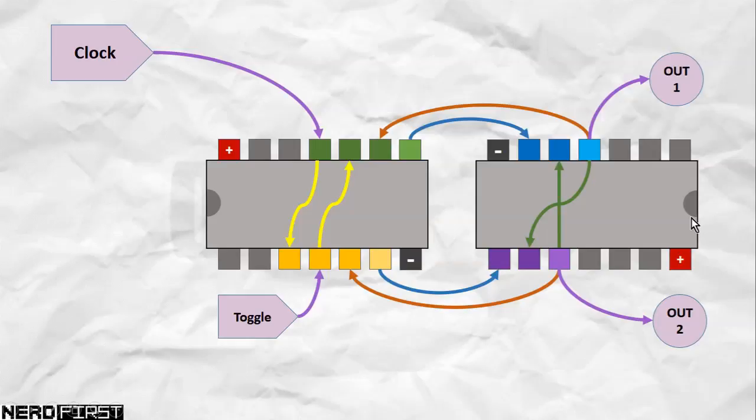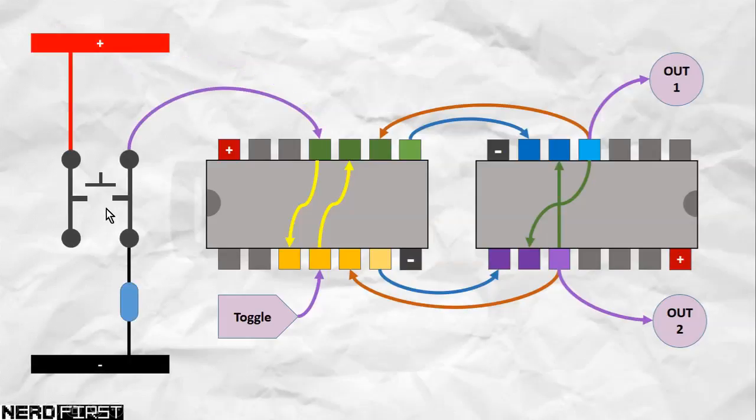Now, we will not actually be building a clock that ticks at regular intervals. Instead, we will generate our own pulse using a switch. I think you've seen this switch enough throughout this series, so I'm not going to explain it too much.